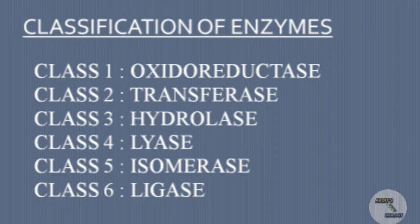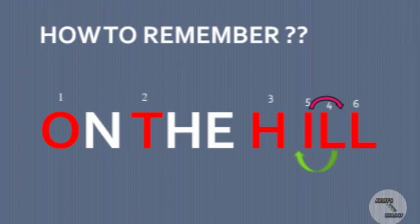Enzymes can be classified into six classes: oxidoreductase, transferase, hydrolase, lyase, isomerase, and ligase. To remember these six classifications, we use the sentence 'on the hill.' The first letter O stands for oxidoreductase, T stands for transferase, H stands for hydrolase. Then the two terms L and I switch their positions, so L stands for lyase, I stands for isomerase, and the last L stands for ligase.